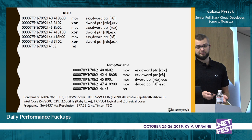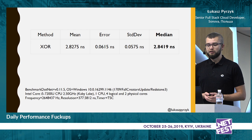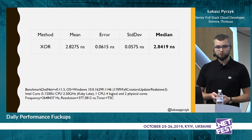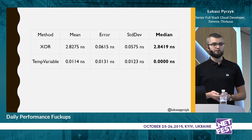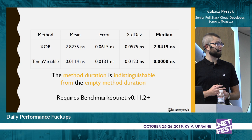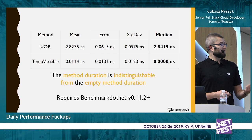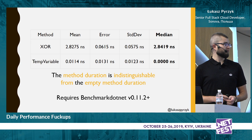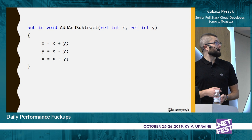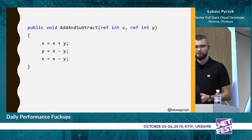I ran a simple benchmark with benchmark.net, and on my computer the XOR operation took around three nanoseconds. But what was more surprising — using a temp variable took 0.0000 nanoseconds. In newer versions of benchmark.net, you may see a warning saying the method duration is indistinguishable from an empty method's duration, meaning the CPU cost of running this method is the same as running an empty method — it took only one CPU cycle. You need benchmark.net higher than 0.11.2 to see this warning. There's also a third option using add and subtract, but it's the slowest one, at least on my machine.